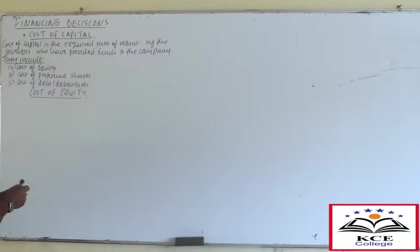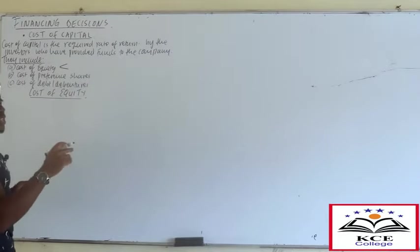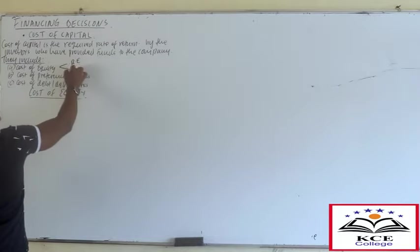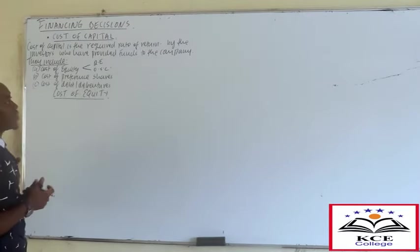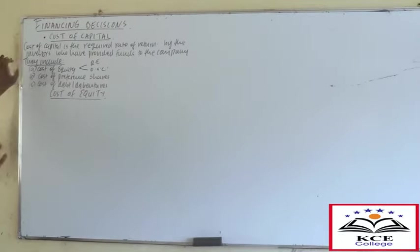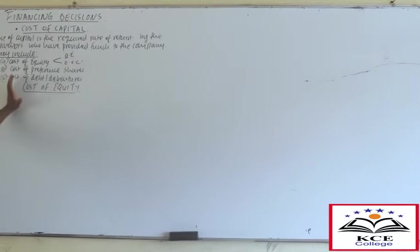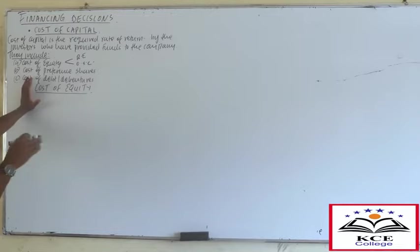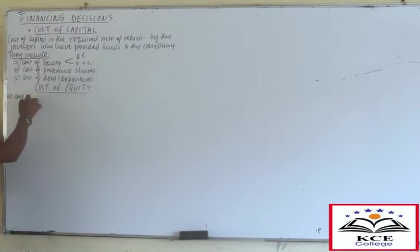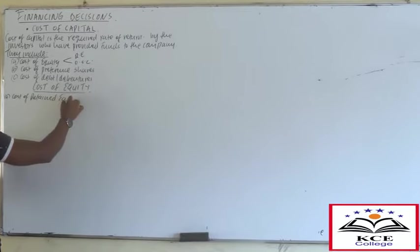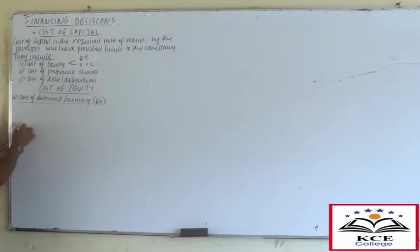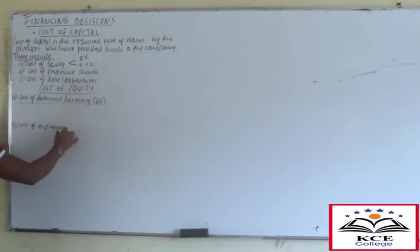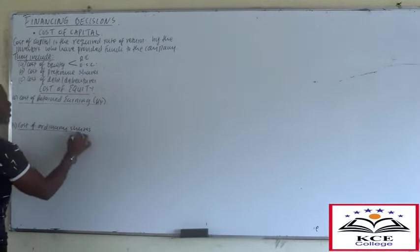Under cost of equity, these are the ordinary shareholders - the real owners of the company. All results belong to them including retained earnings and ordinary share capital. The cost of equity is classified into two: Number A, cost of retained earnings, denoted by KR, and Number B, cost of ordinary shares, denoted by KE.